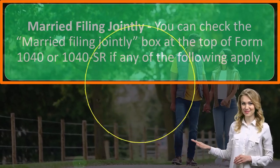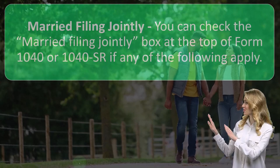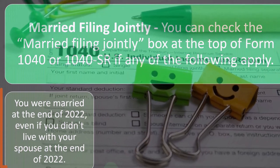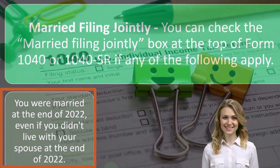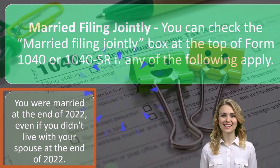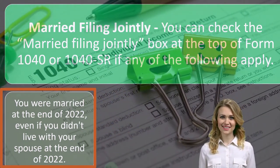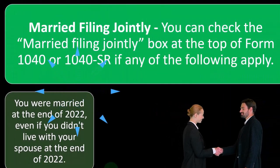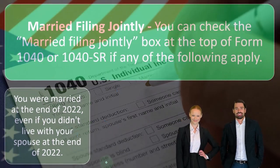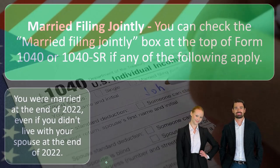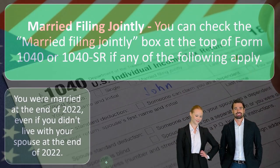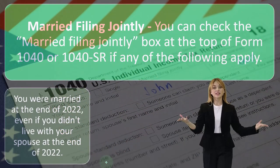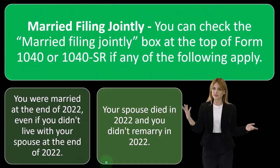For married filing jointly status, you can check the married filing jointly box at the top of Form 1040 or 1040-SR if any of the following apply. You were married at the end of 2022, even if you didn't live with your spouse at the end of 2022. From a tax standpoint, marriage is essentially a legal contract — if the marriage happened in 2022, your assets are treated as one, and your options fall under the married category: married filing jointly or married filing separately.